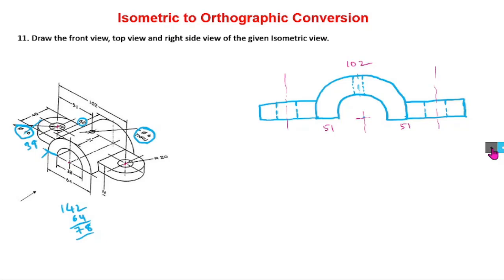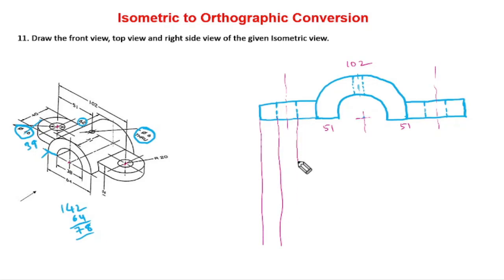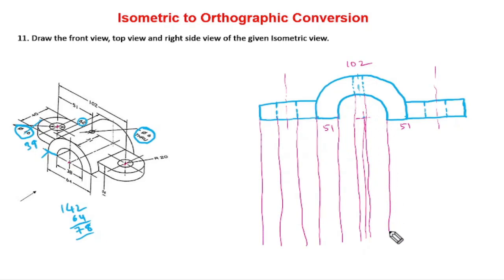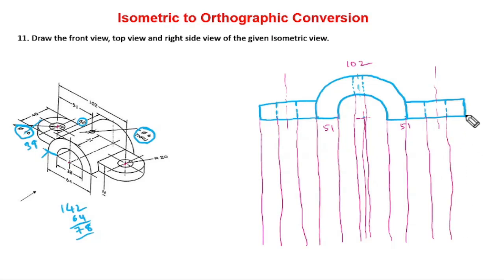That is our complete front view. Now I am going to draw the projection lines for drawing the top view. We need to take lines like this. From the front view I am going to take each and every detail. Center, next each inner circle including the small circle. Left side 3 mm, right side another 3 mm. And this distance, after that this circle, and after that this last line.